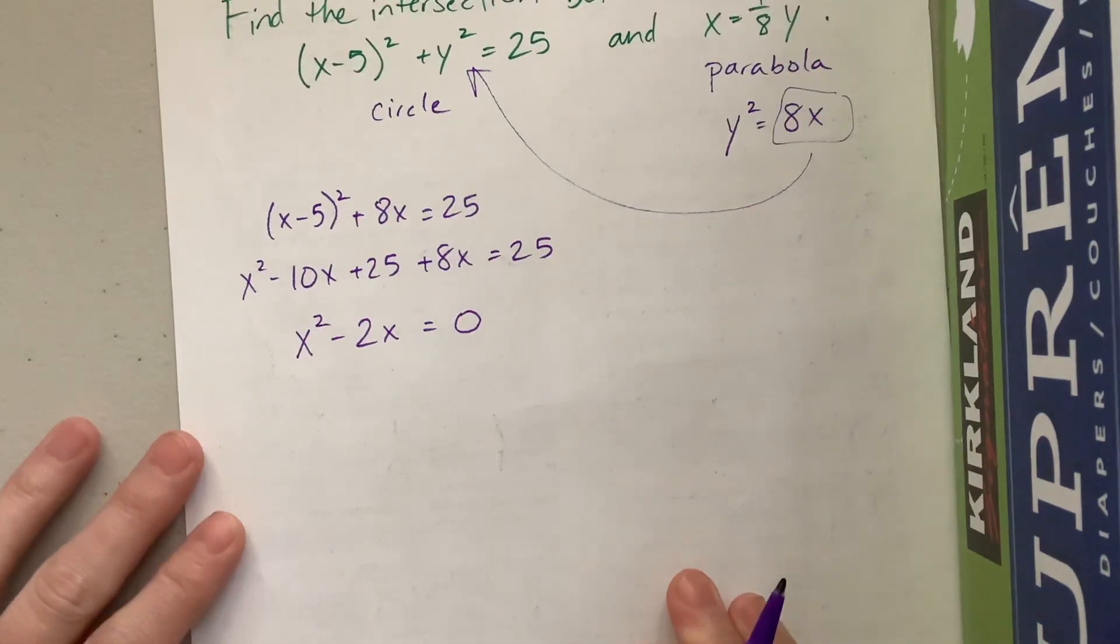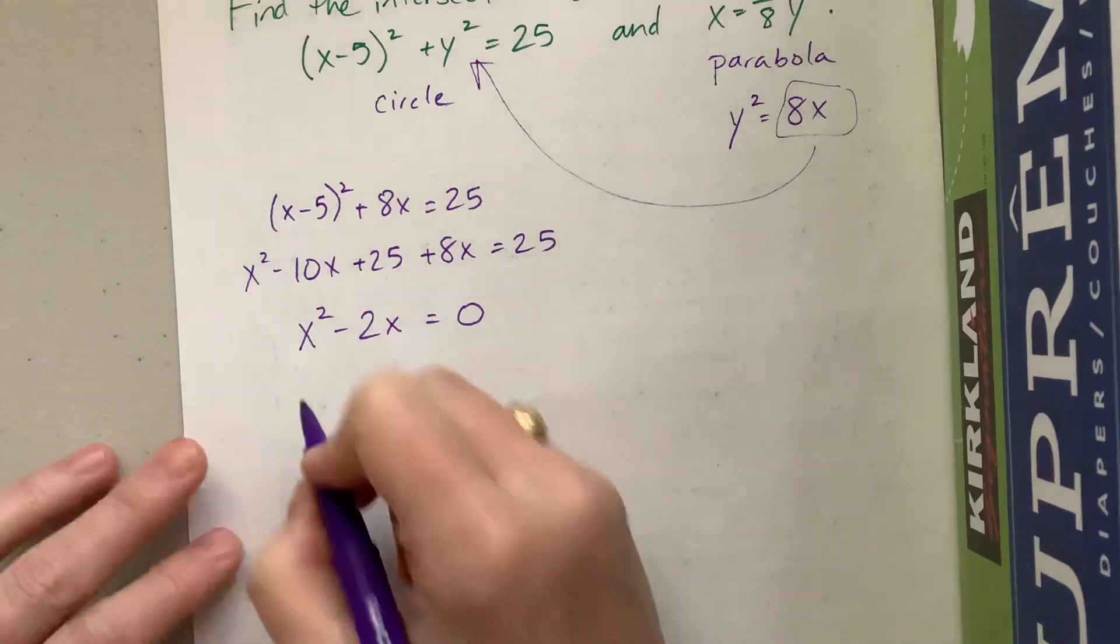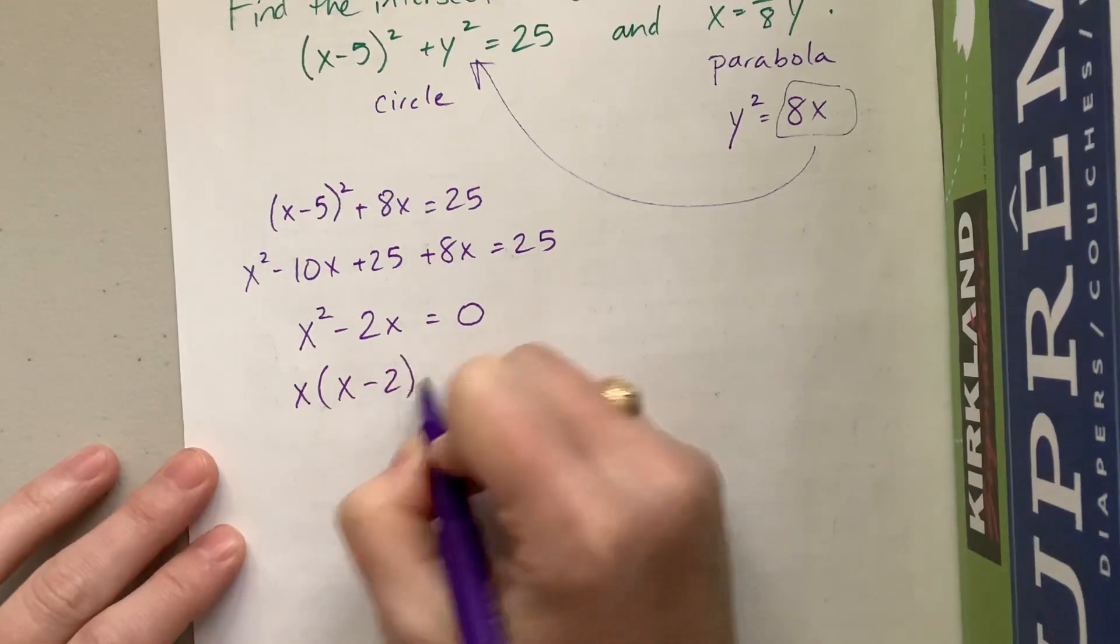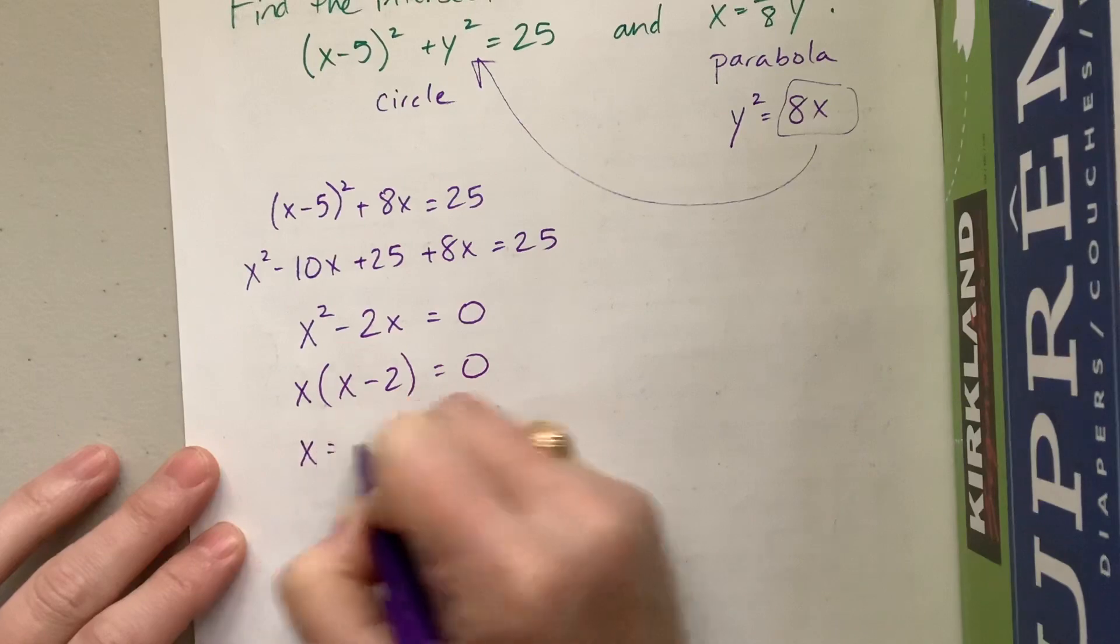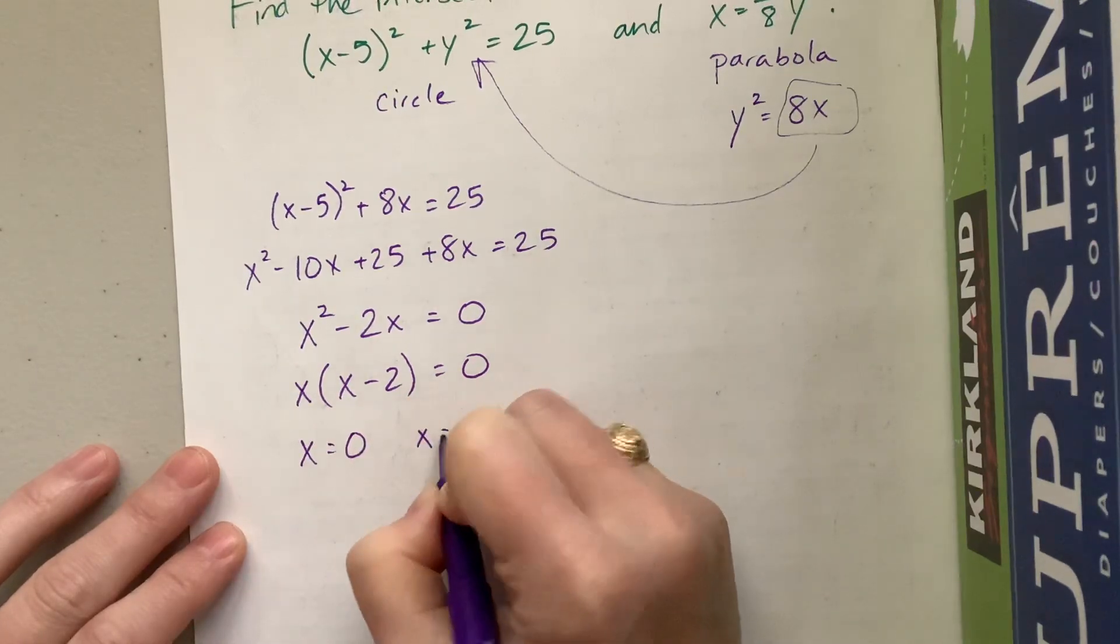Yes, this could definitely be significantly more challenging but we're going to just go with this. So I can factor this out and I get that x = 0 and I get that x = 2.